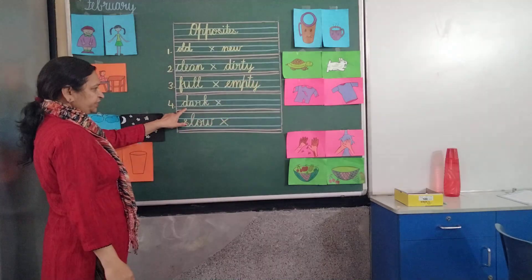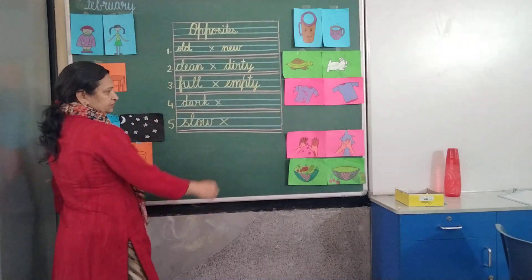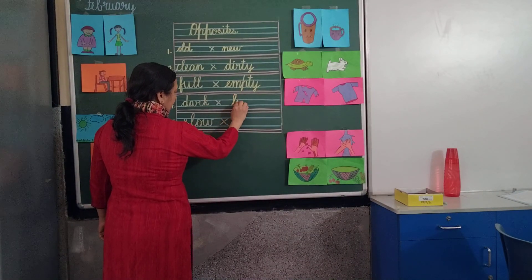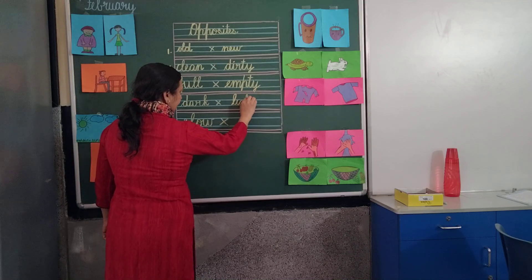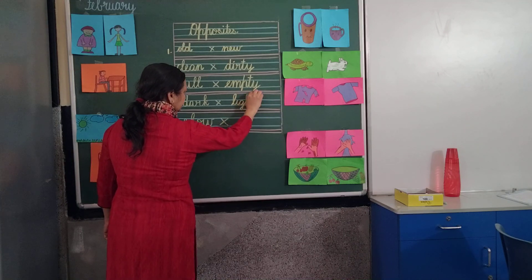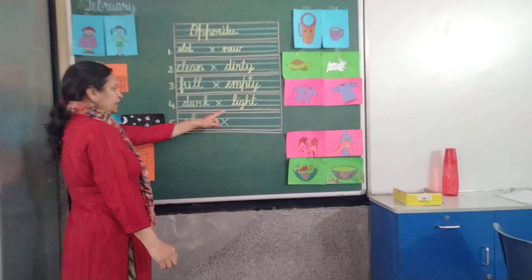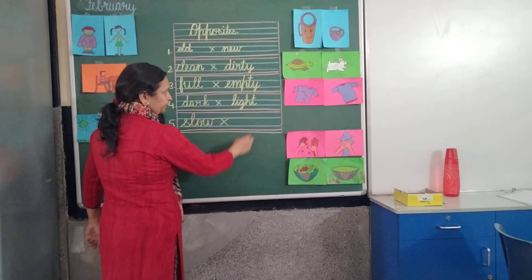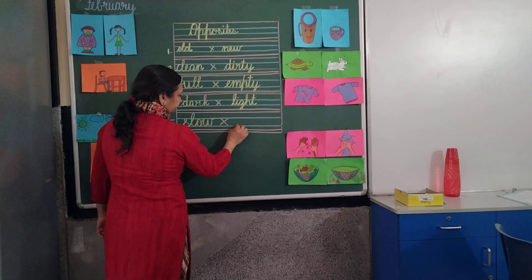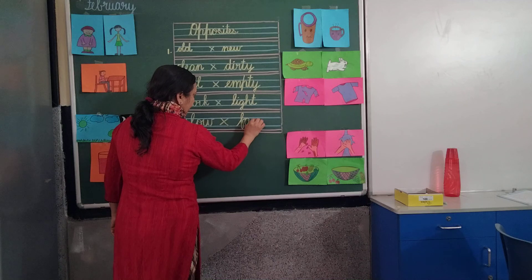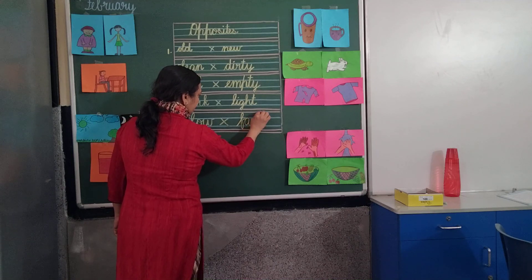Now next, read: D-A — light. N-I-G-H-T. Put a dot on i — light. Slow, slow — opposite is fast. F-A-S-T, fast.